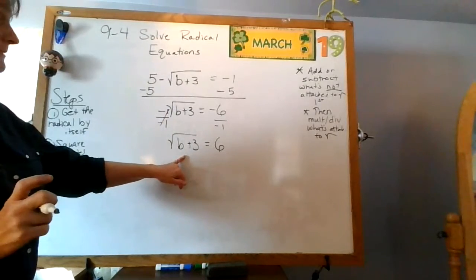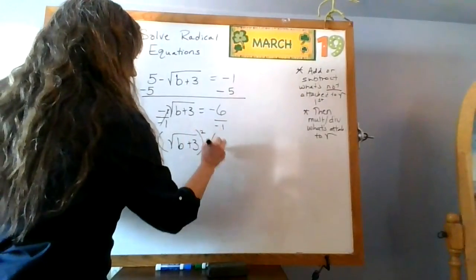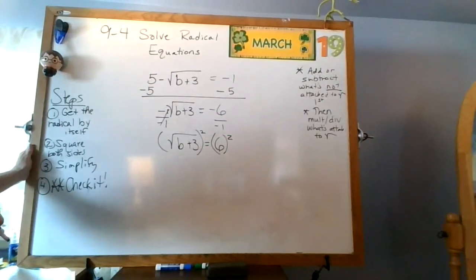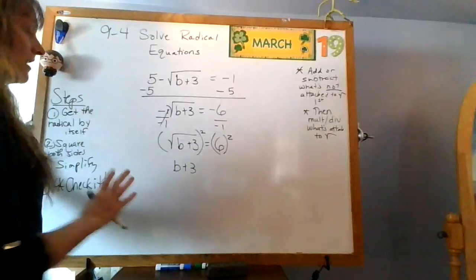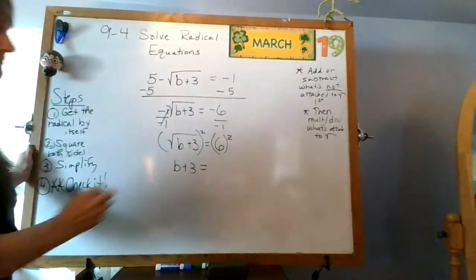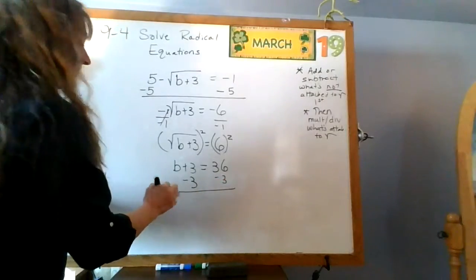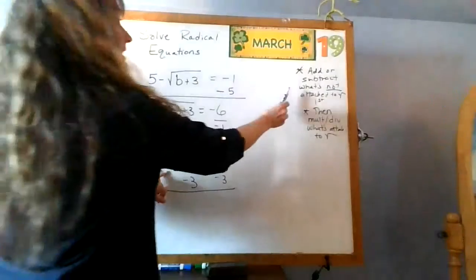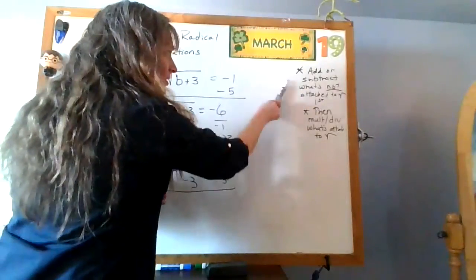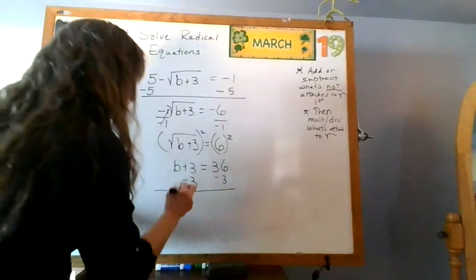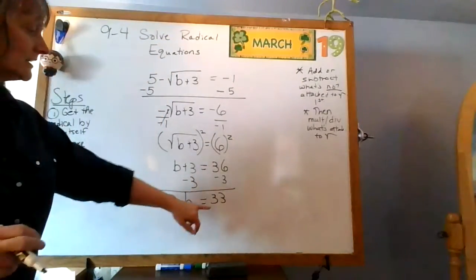Negative six divided by negative one is positive six. So now I have the square root of b plus three equals six — the radical is isolated. Step two: square both sides. I remove the square root sign and get b plus three equals thirty-six. To isolate b, subtract three from both sides: b equals thirty-six minus three, which is thirty-three. There's no coefficient on b, so I don't have to divide — b equals thirty-three.